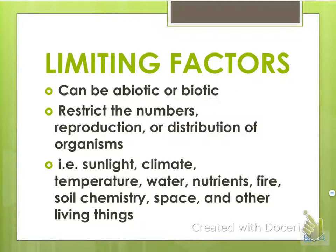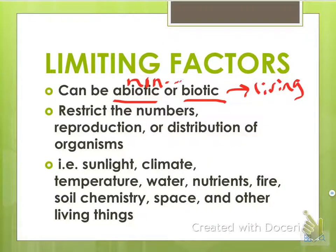There can be limiting factors, and these can be abiotic or biotic. Biotic means living; abiotic is non-living. Limiting factors restrict the numbers, reproduction, or distribution of organisms — how many animals can survive in an environment. Examples include sunlight, climate, temperature, water, nutrients, fire in a grassland, soil chemistry, living things in the area, and the space they occupy.